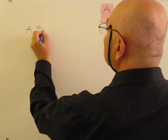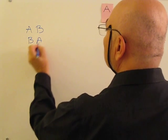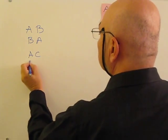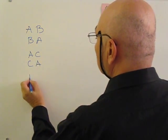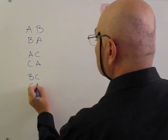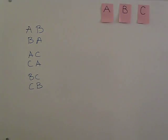A, B, B, A, A, C, C, A, B, C, C, B. So there are six ways I can create words from these two letters.